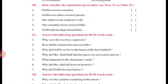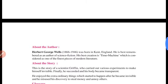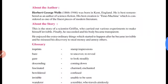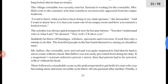Question number two: How did the scientist become invisible? Scientist kis tarike se invisible hue the? Unhone ek drug leli thi. The scientist swallowed some rare drugs and his body became transparent. This is the story of scientist Griffin, who carried out various experiments to make himself invisible. Finally he succeeded and his body became transparent.